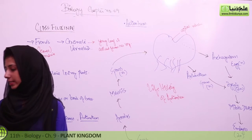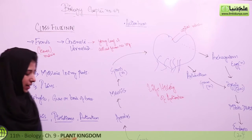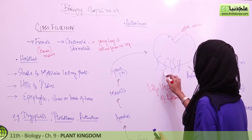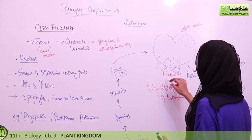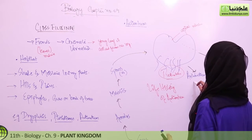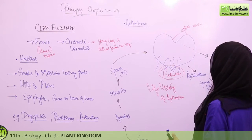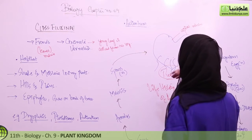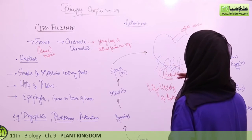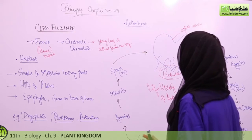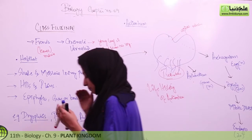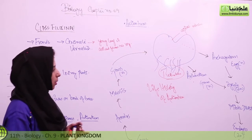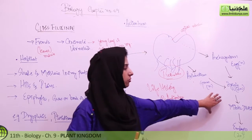Now let's talk about the life cycle. In the life cycle, the most basic element is the prothallus. In the case of Adiantum, we have a prothallus — this whole structure is the prothallus. On the prothallus, there is a male reproductive organ and a female reproductive organ. The archegonium is responsible for the production of the egg, and the antheridium is located on the lower side of the prothallus, responsible for the production of sperm. Both will combine to form a zygote.